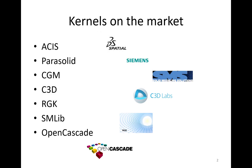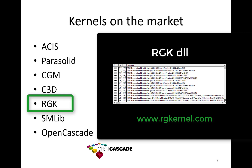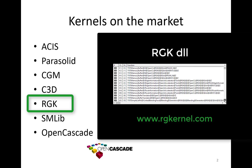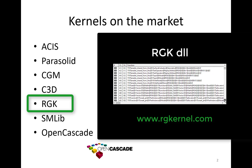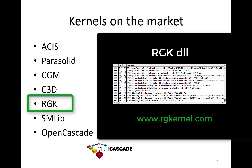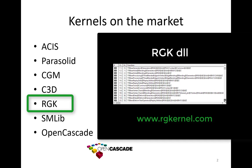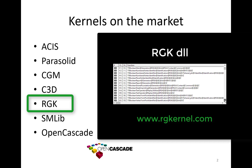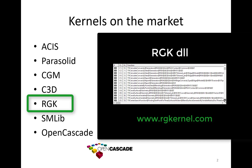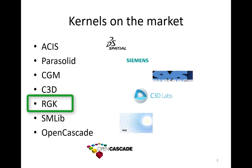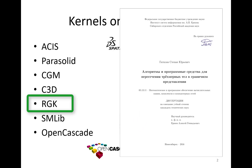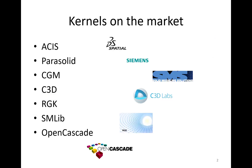There is also RGK, a sort of phantom geometric modeling kernel which was never actually released — you cannot go and license it. Still, it's a pretty interesting project because RGK stimulated research in the CAD domain and allowed us to refresh on the foundations of geometric modeling and computer-aided design. Some interesting papers were published, and new people were involved, giving our field a kind of new breath.